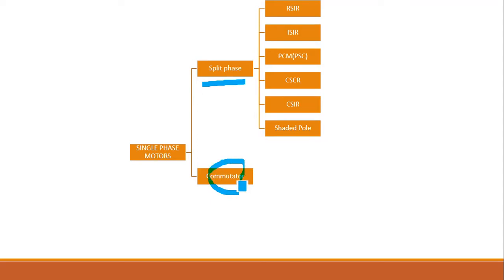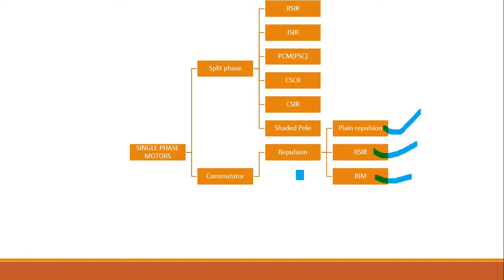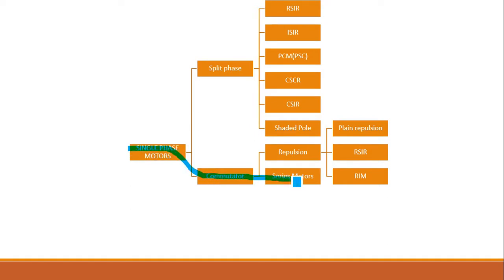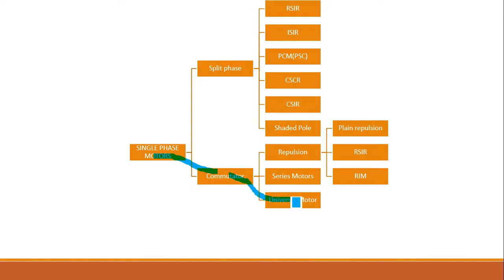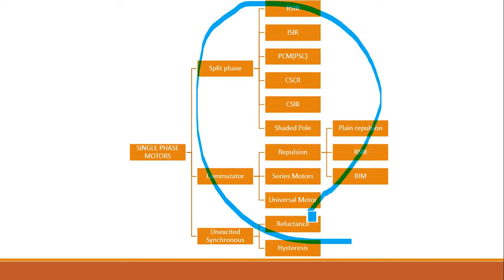The second main classification is commutator motors. In commutator motors, you have the repulsion motor, which includes the plain repulsion motor, RSIR — Repulsion Start Induction Run motor — and repulsion induction motor. Also under commutator motors is the series motor and the universal motor. The third classification is non-excited synchronous motors, including reluctance and hysteresis motors.